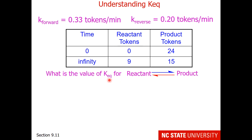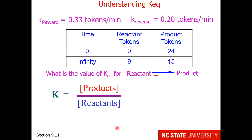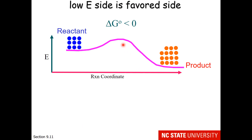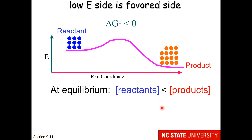What is the value of K_eq for this reaction? It can be defined as products divided by reactants: 15 divided by 9, which is 1.67. Another definition is the forward rate constant divided by the reverse rate constant: 0.33 divided by 0.2, which is also 1.67. One way to think about equilibrium is like a balance: if delta G0 is negative — meaning product is at lower energy than reactant — we will have more product than reactant. So for scenarios where delta G0 is negative, products are in excess of reactants and the equilibrium constant will be greater than 1.